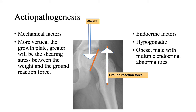One factor is the mechanical factor. The weight and the ground reaction force will produce a shearing stress on the growth plate. If the growth plate is horizontal, the weight and ground reaction force will compress it. But if it is vertical, they will produce a shearing stress and allow the slip to occur.